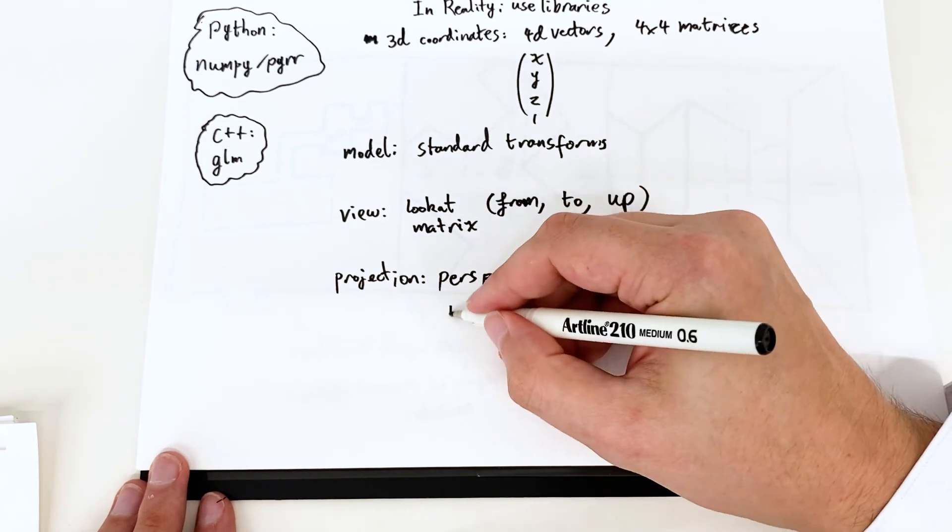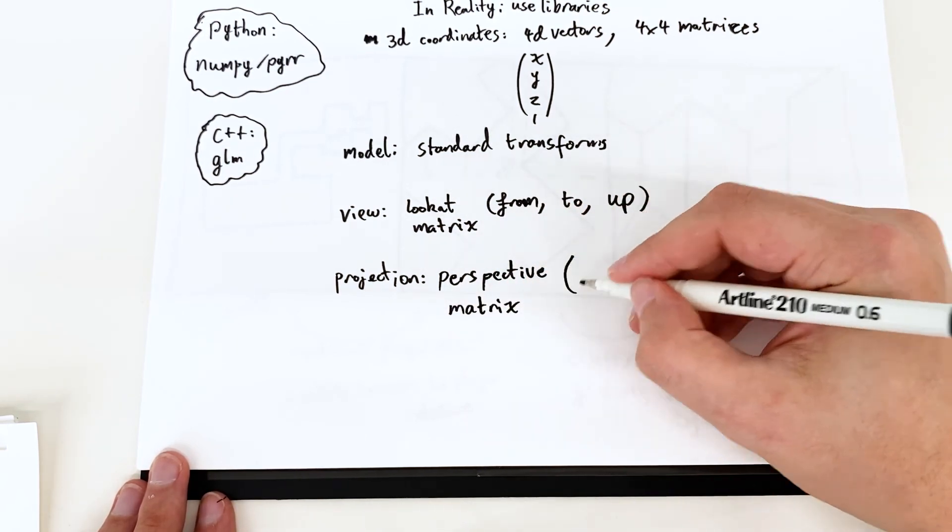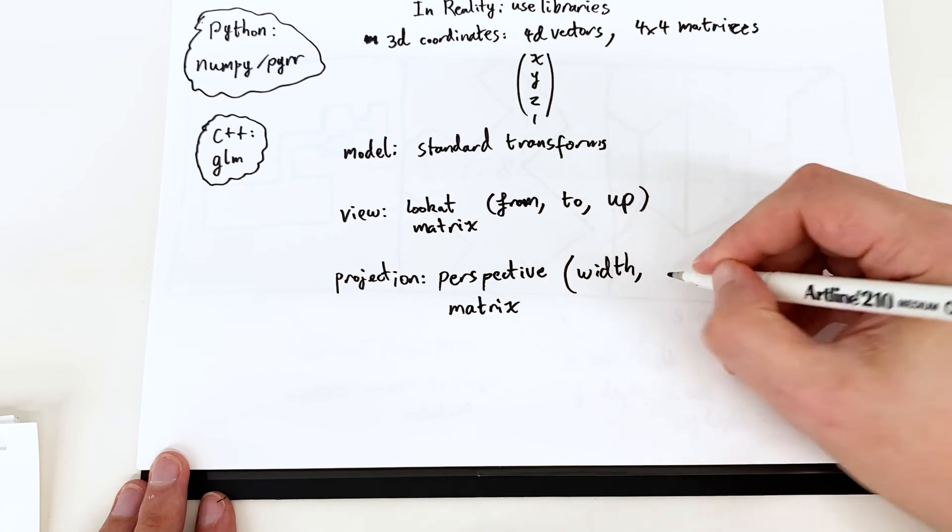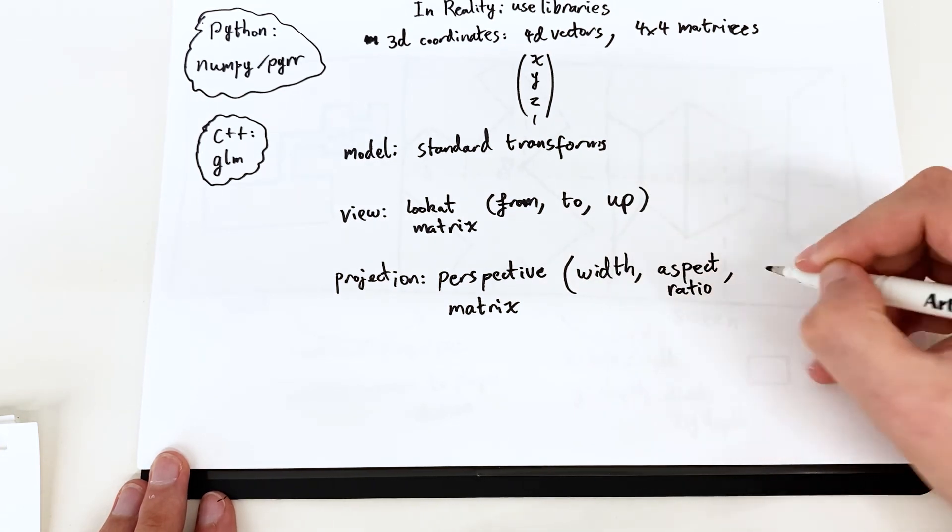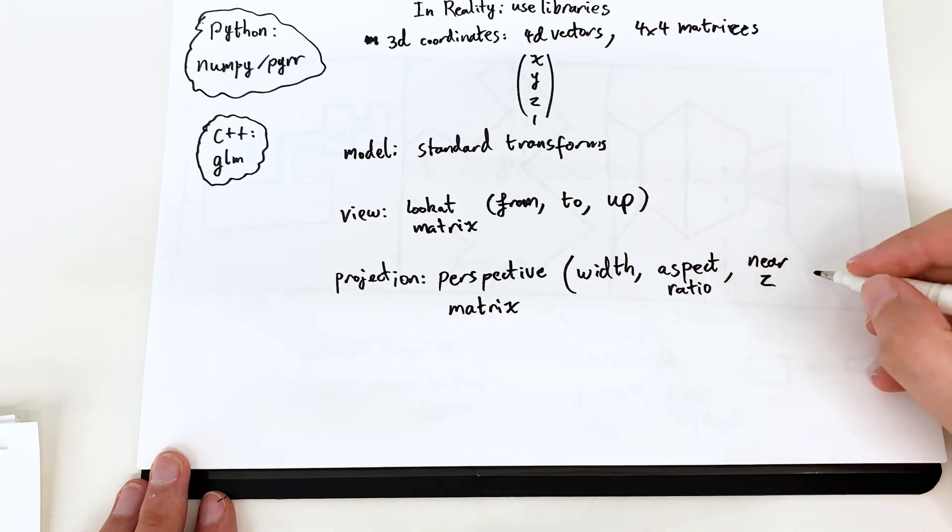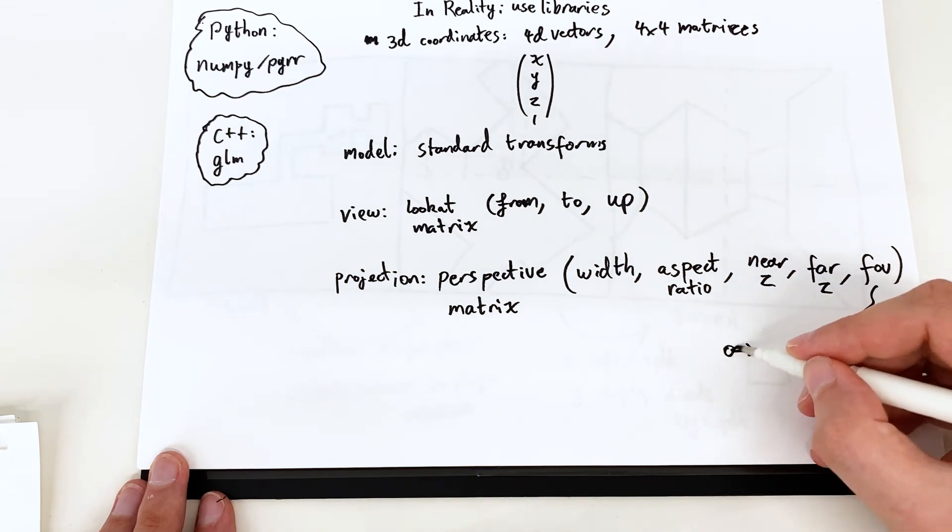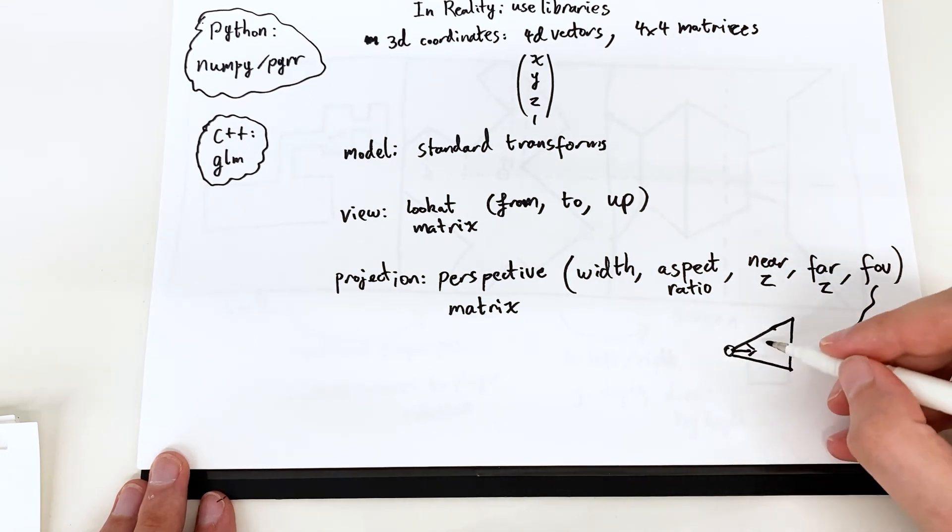Okay. So then we have to work out our model, view, and projection transformations. Now in the example before... Oh, well, first of all, for model transformations we can just use the standard transformations as defined by the matrix libraries. So they have routines to create rotation matrices and everything.